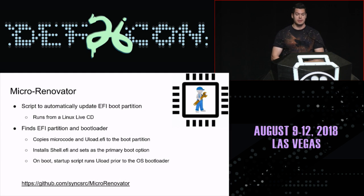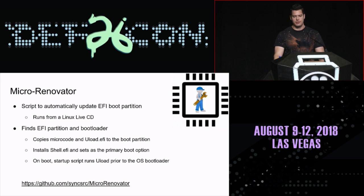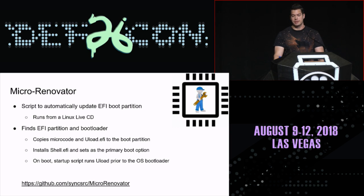I wrote some scripts to install this automatically. It modifies the EFI boot partition on a Windows system to load the microcode loader app. It runs off a Linux live CD — you can take an Ubuntu or Fedora live CD, boot into it, check out the repo from GitHub, and run the installer. It will detect your CPU version, try to find updated microcode for it, then copy that and all the EFI apps it needs onto the boot partition, and set them as the default boot target so they run before the Windows bootloader on every startup.